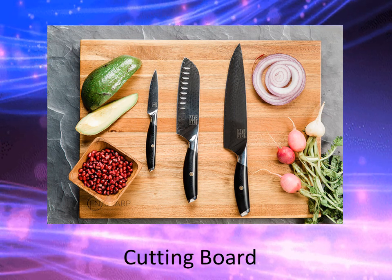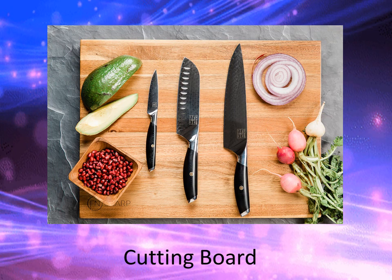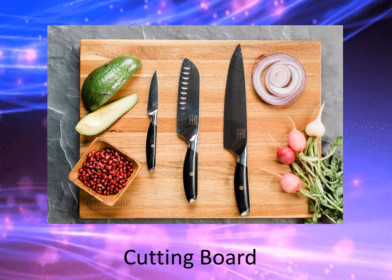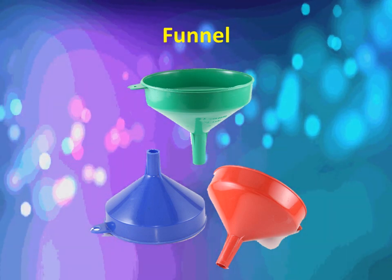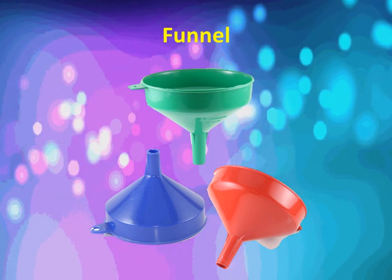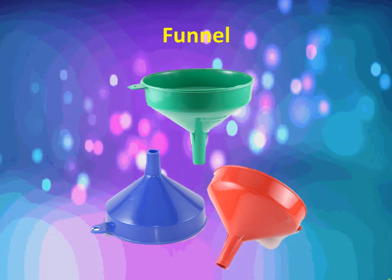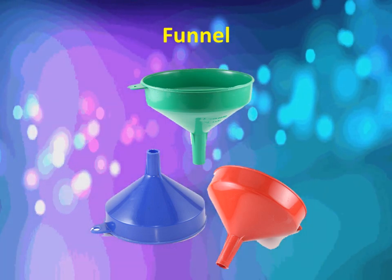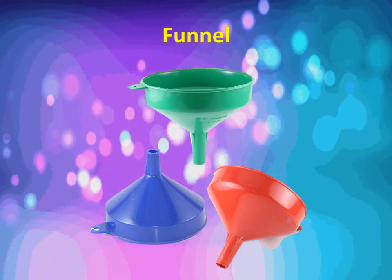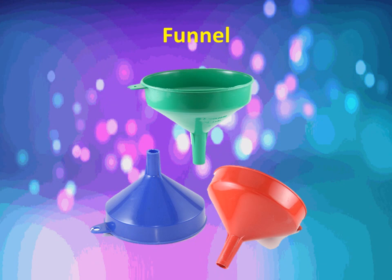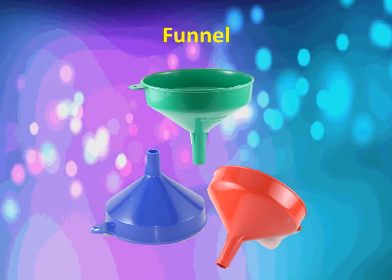Next we have a cutting board. Those are wooden or plastic boards where meat, fruits and vegetables can be cut. Next we have a funnel. A funnel is used to fill jars and is made of various sizes of stainless steel, aluminum or plastic. We use a funnel to transfer liquid ingredients from one container to another.